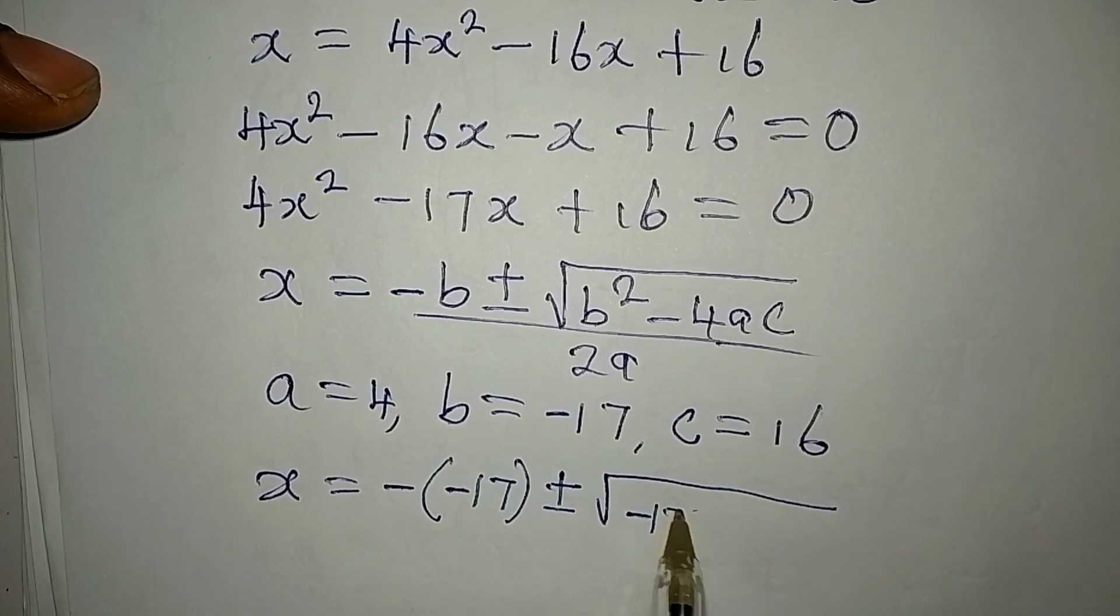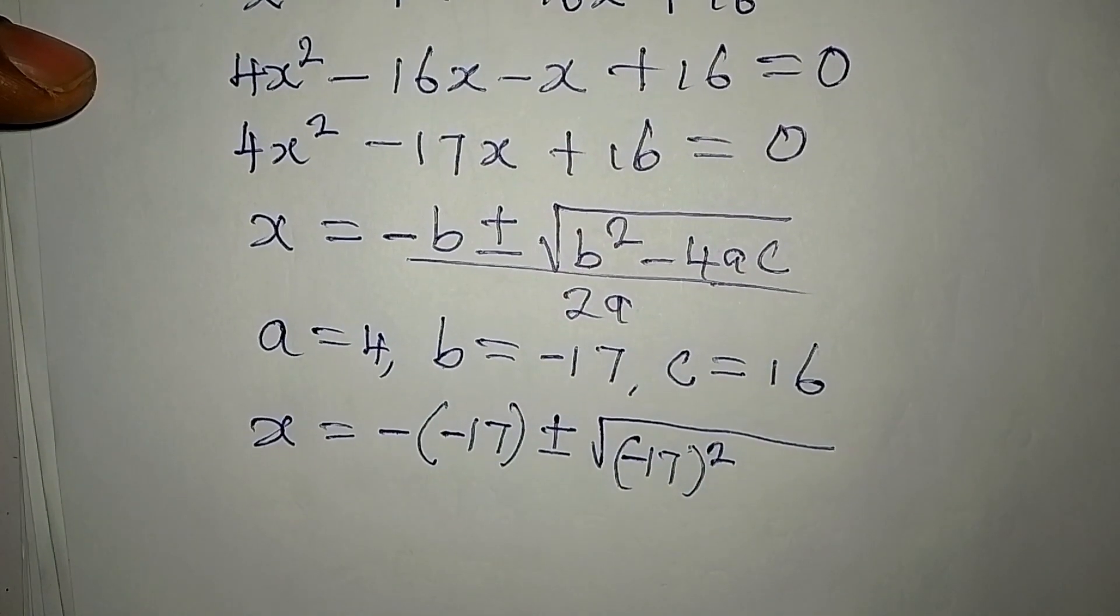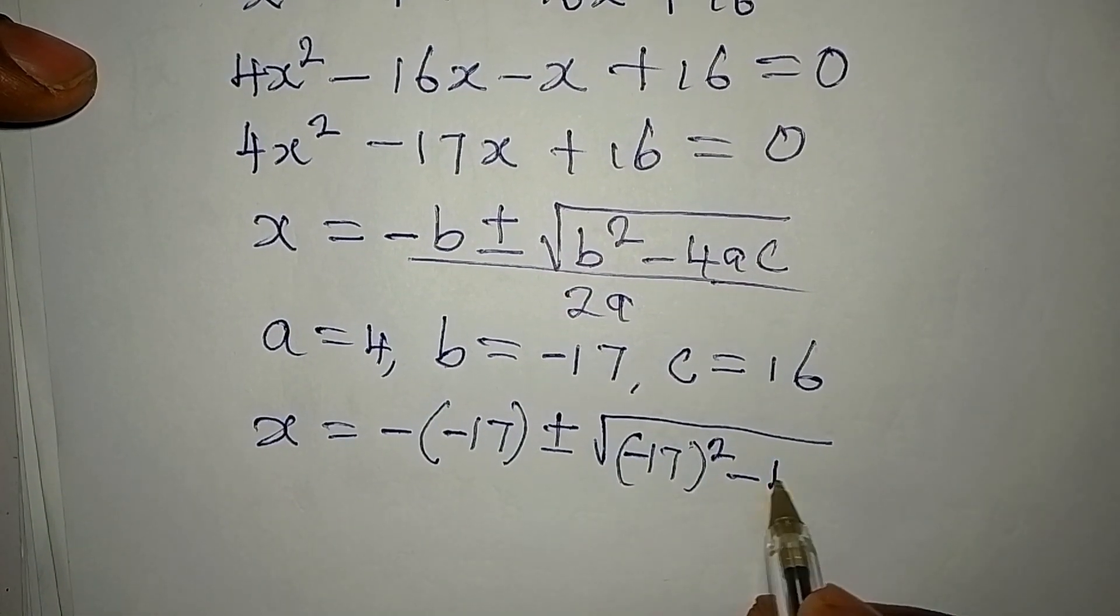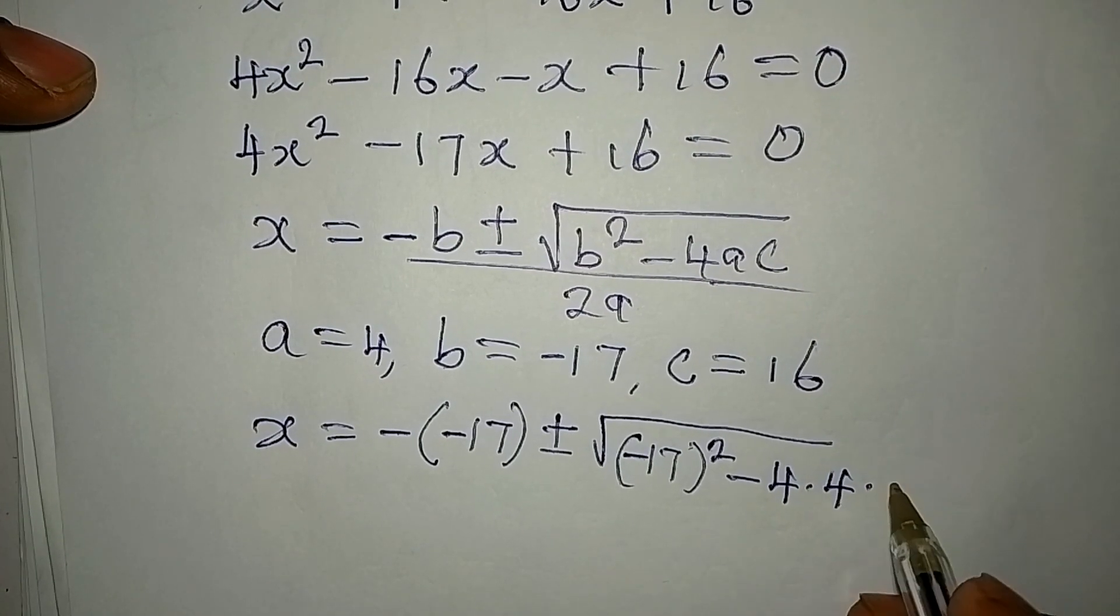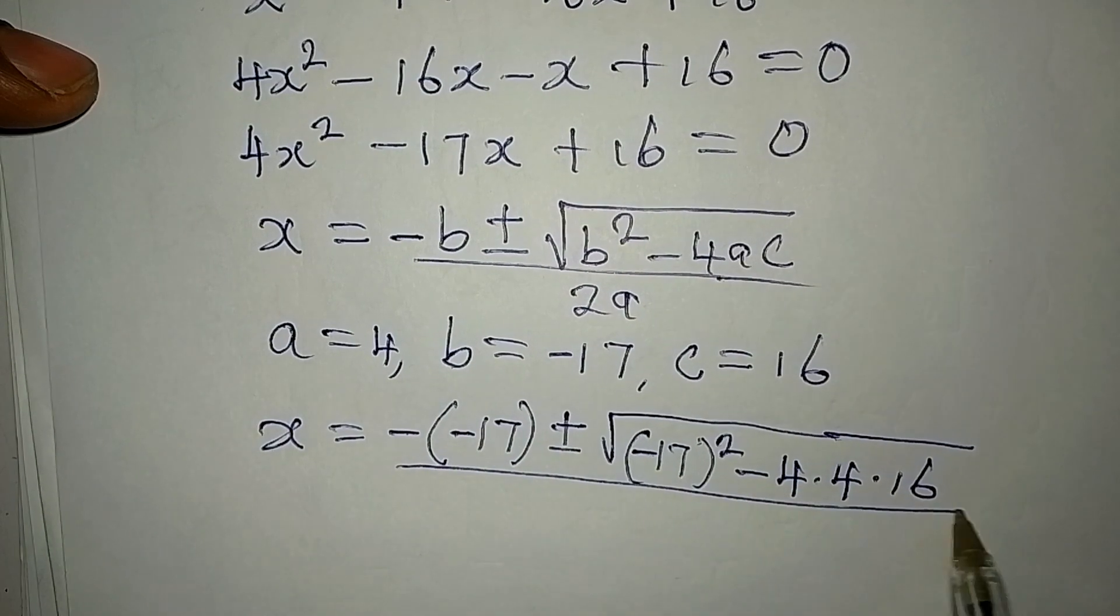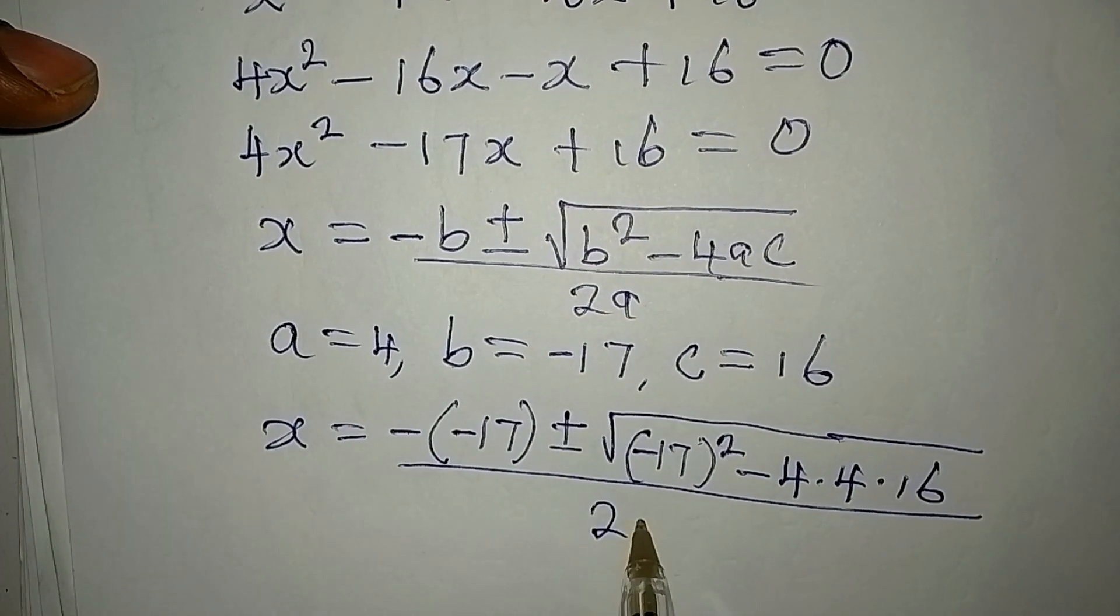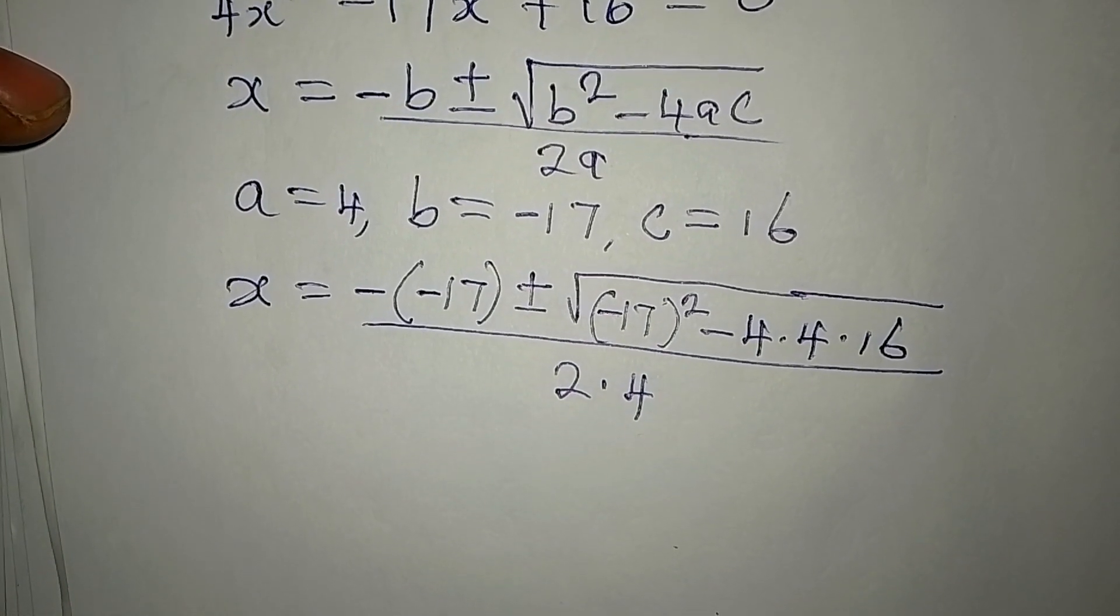We have negative 17 squared. Because b is negative 17, then minus 4 times a, a is 4, times c, c is 16. Then this is over 2 times a, and our a is 4.